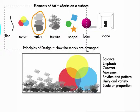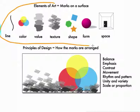Our Elements of Art one might think of as the actual marks an artist makes on a surface — that is the line, the color, the values, the textures, the shapes, the forms, and how they are arranged in space.